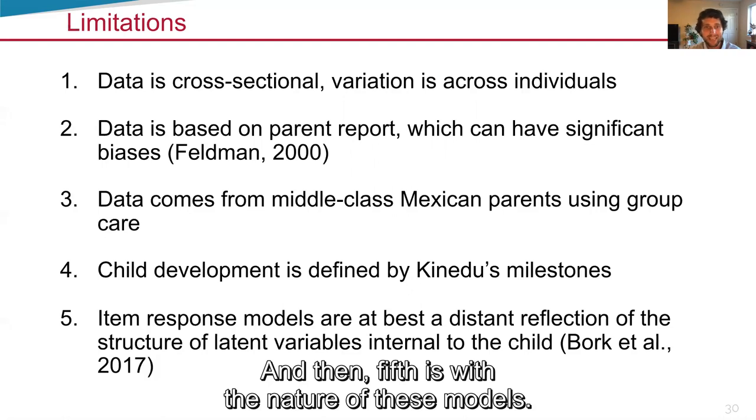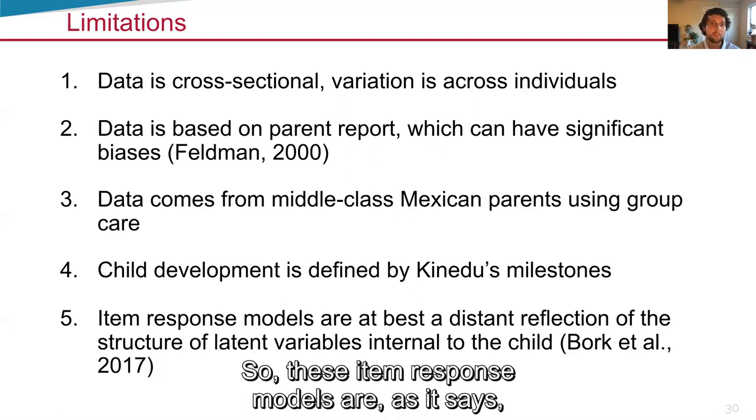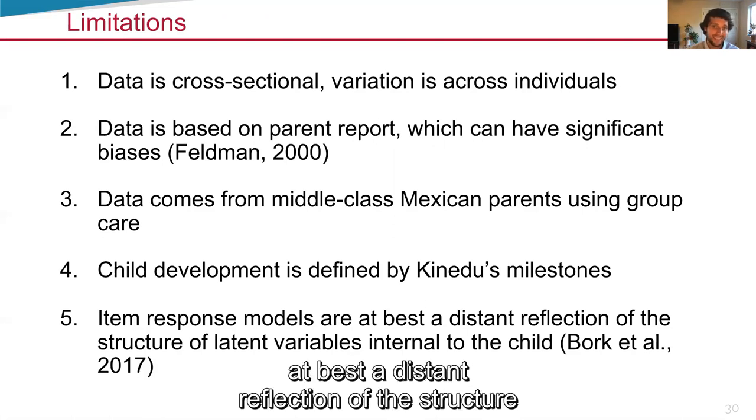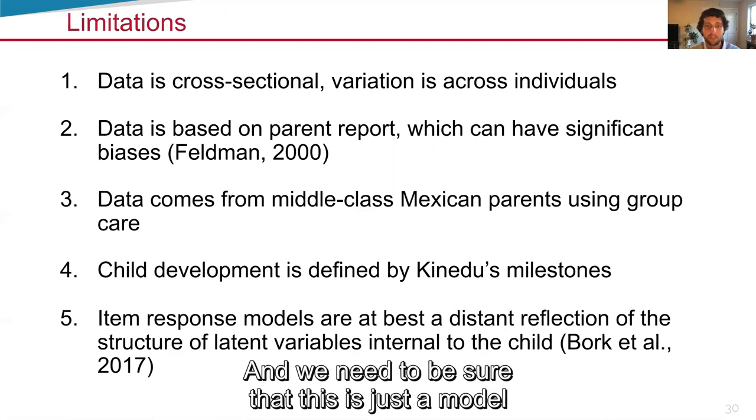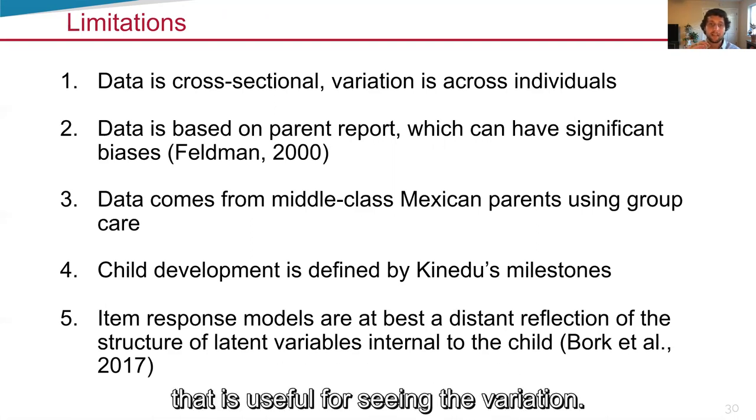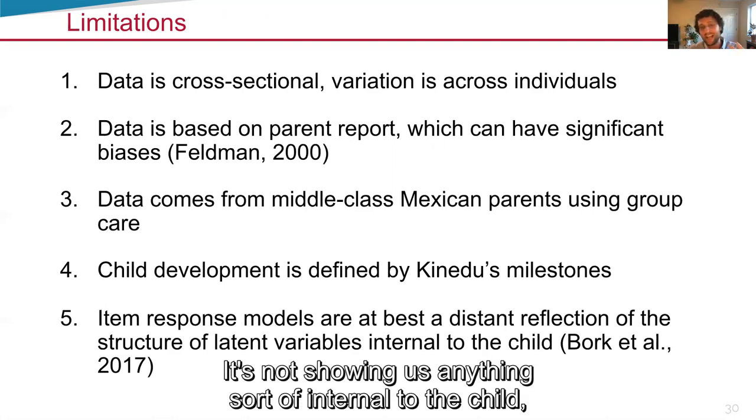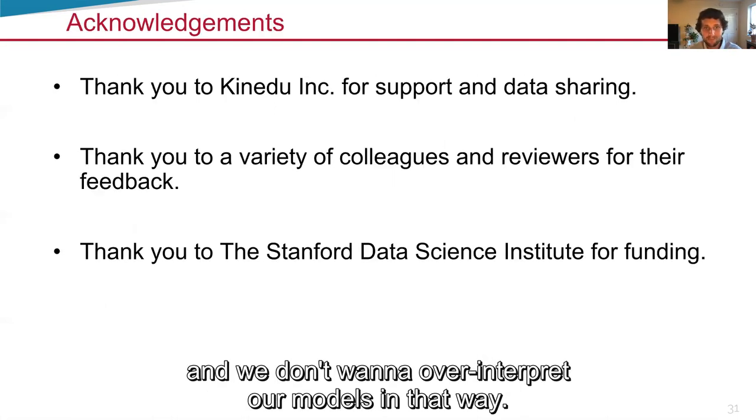And then fifth is with the nature of these models. These item response models are, as it says, at best, a distant reflection of the structure of latent variables internal to the child. And we need to be sure that this is just a model that is useful for seeing the variation. It's not showing us anything sort of internal to the child. We don't want to over-interpret our models in that way.